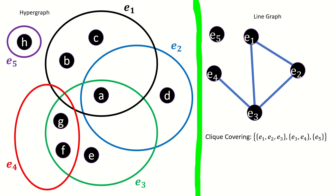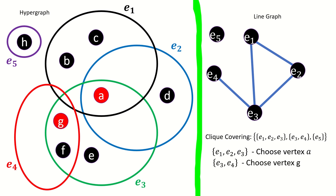For the first clique in the clique covering — clique E1, E2, E3 — we can choose vertex A. For clique E3, E4, we have two choices: both vertices G and F would work, so let's choose G. For clique E5, we have to choose H, as it's the only vertex incident to the single edge in the clique. The set of these vertices, A, G, H, is a transversal in our hypergraph.